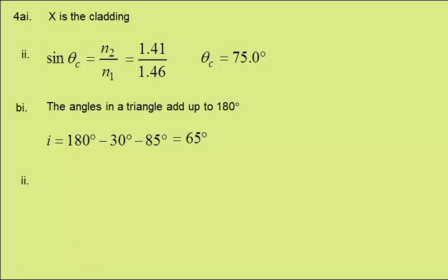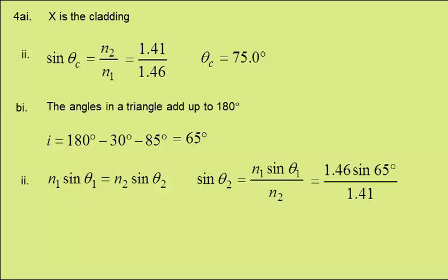For part 2, we're asked to calculate the angle R. For this, we can use Snell's law, and theta 2 is R in this case. Putting in all the values gives theta 2 at 70 degrees.